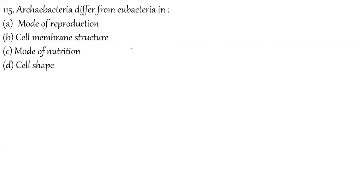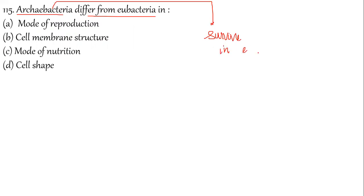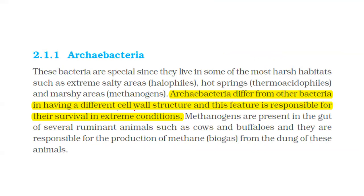Question 115: Archaebacteria differs from Eubacteria. The speciality of Archaebacteria is that they can survive in extreme conditions due to changes in their cell membrane or cell wall structure. This altered cell wall or cell membrane structure allows them to survive in extremities.